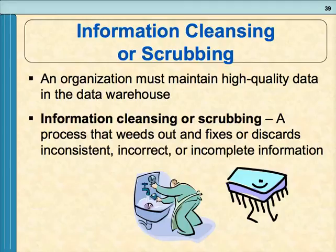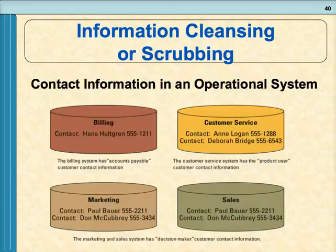The data warehouse needs high-quality information — the quality requirements may be even higher than for operational databases. If data has missing information, inconsistencies, or inaccuracies, it needs to go through a process called data cleansing or scrubbing to fix those issues. For example, recall the earlier example where we saw two records for 'Jenny Roberts' — one spelled 'Roberts' and one spelled 'Robert' at the same address. You have to determine which is correct and discard the duplicate.